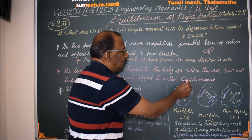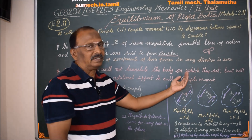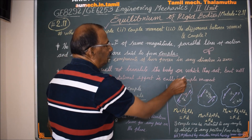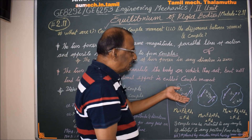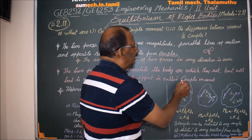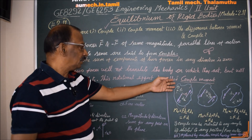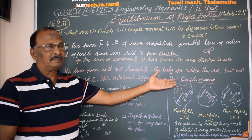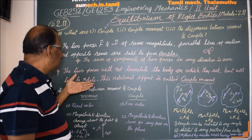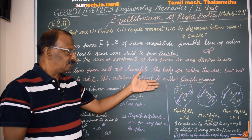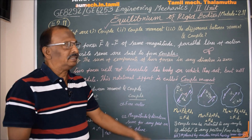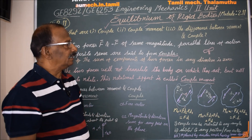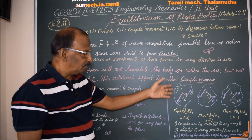If you try to do this, the body will rotate and try to rotate. This rotational effect is called couple moment. The two forces will not translate the body on which they act, but they will tend to rotate. This rotational effect is called couple moment.